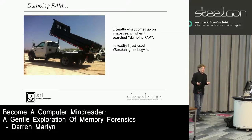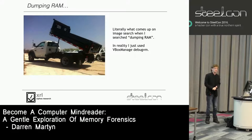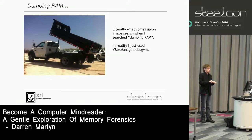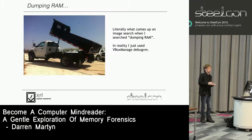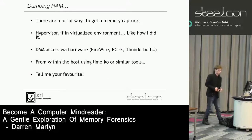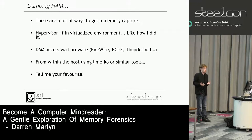I was looking for an image for this and I typed 'dumping RAM' into Google Images and got something that doesn't look like what it actually looks like. I was using VirtualBox as my VM software. It turns out VirtualBox has this awesome feature where you can just dump the RAM of a VM with the debug VM command - it dumps out an ELF core file which Volatility can read. So that was really easy.